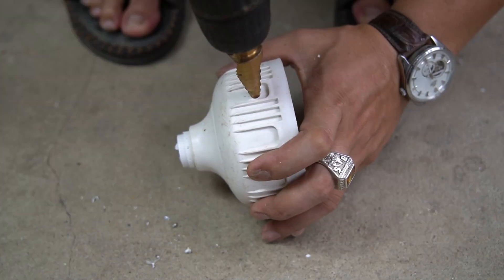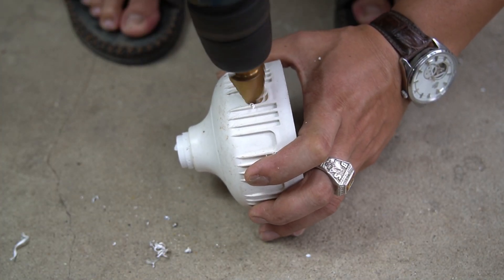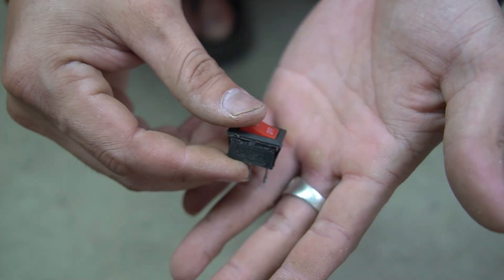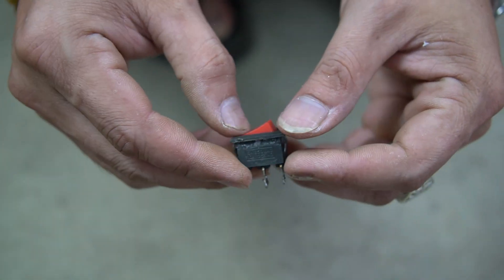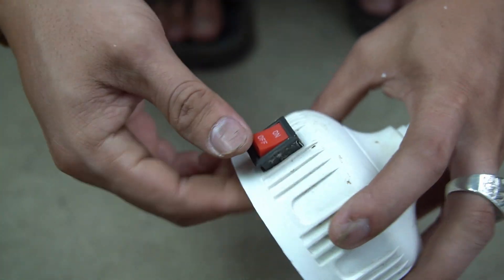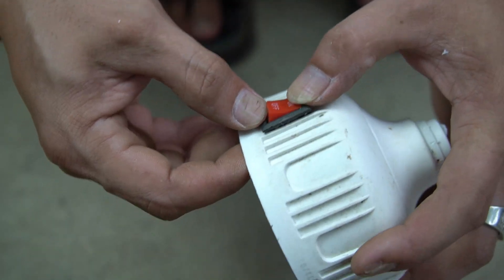Next, I will remove the bulb socket from the bulb housing. I will install a small switch on the light bulb housing.